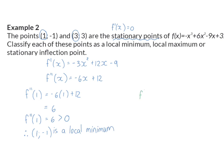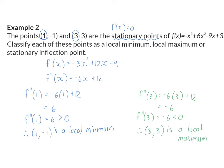Similarly, substituting the second x coordinate of 3, we get a value of minus 6. This means the second derivative at x = 3 is equal to minus 6, which is smaller than zero. So (3, 3) is a local maximum.